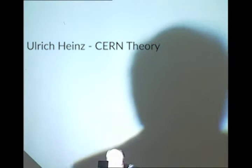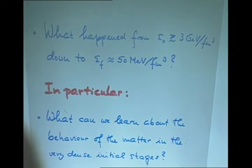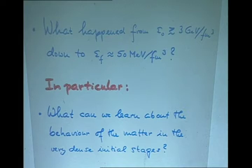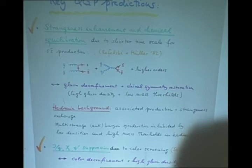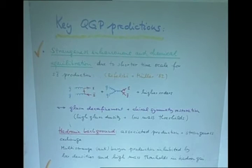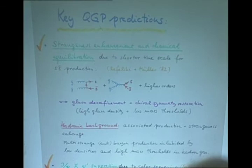The big question is, of course, what happened in between? What happened while the system was going from the initial high energy density to the final low energy density? And in particular, what can we learn about the behavior of matter in the very dense initial stages? I would like to summarize a few of the key predictions that were made before this experimental program started.